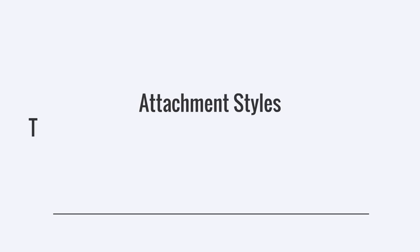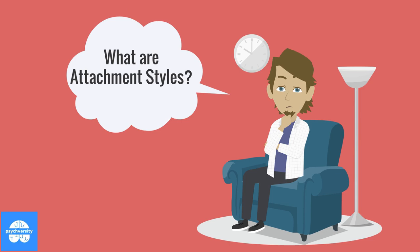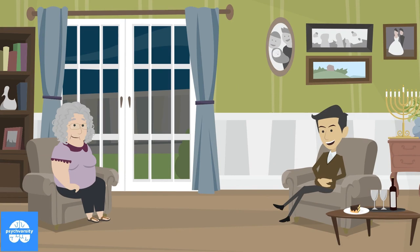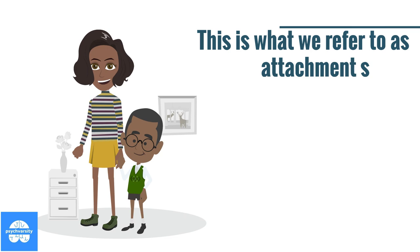Attachment styles — a reason why you might fail at relationships. What are attachment styles? Have you ever pondered on the implications of how we form bonds in our infancy and how those forms of attachment manifest into our adult lives? This is what we refer to as attachment styles.